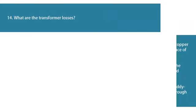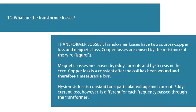Question 14: What are the transformer losses? Transformer losses have two sources: copper loss and magnetic loss. Copper losses are caused by the resistance of the wire (I²R). Magnetic losses are caused by eddy currents and hysteresis in the core. Copper loss is constant after the coil has been wound and is therefore a measurable loss. Hysteresis loss is constant for a particular voltage and current. Eddy current loss, however, is different for each frequency passed through the transformer.